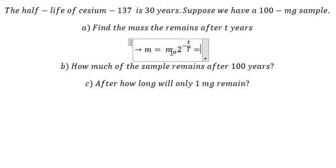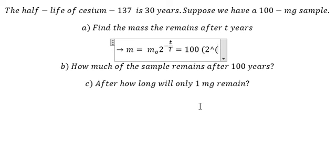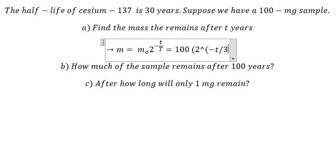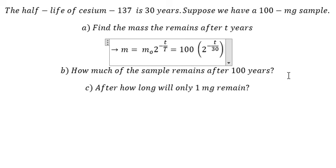So m0, that is the initial mass, we have 100. t is the years, capital T is the half-life, and that is the answer for question a.